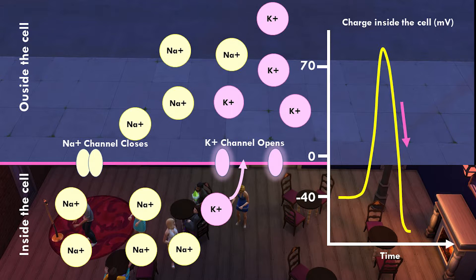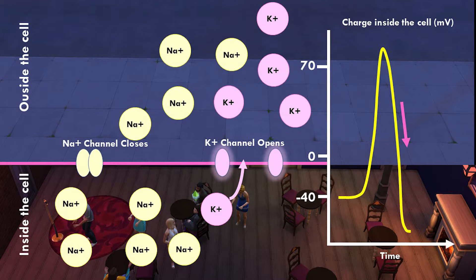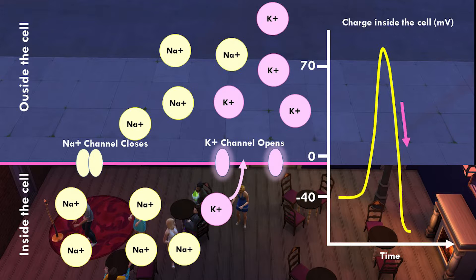As the potassiums leave, the charge inside the cell starts going down — in other words, we start repolarizing, or repolarization. The problem is he's a little bit slow to close the door, and he winds up kicking out a few too many potassiums.